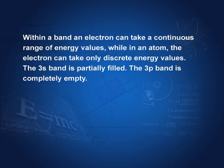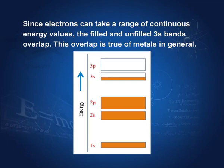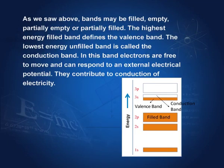Within a band, an electron can take a continuous range of energy values — not one fixed value, but a continuous range. The 3p band is completely empty in sodium. Since electrons can take a range of continuous energy values, the filled and unfilled 3s and 3p bands overlap as far as energy states are concerned. This overlap is true of metals in general. Bands may be filled, empty, partially empty, or partially filled — as in this example of sodium: filled, filled, filled, partially empty, and so on.